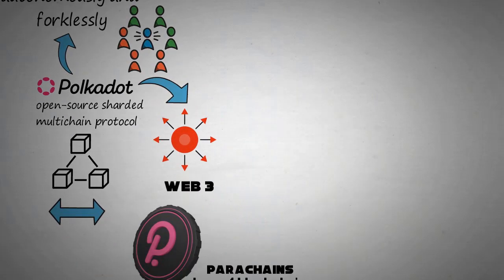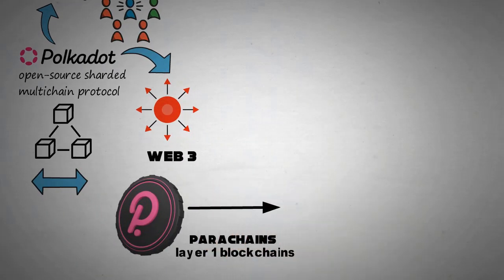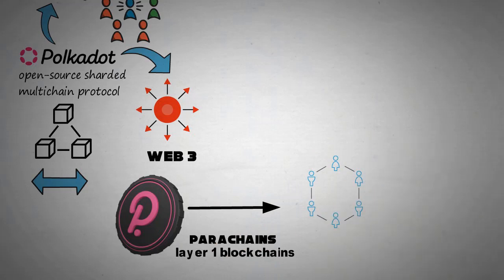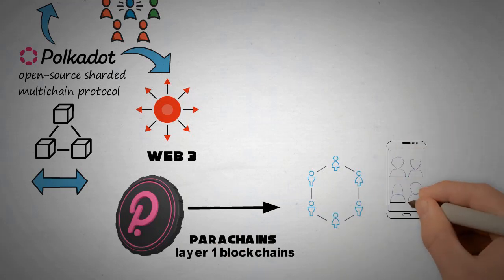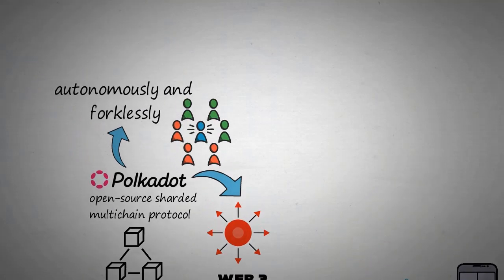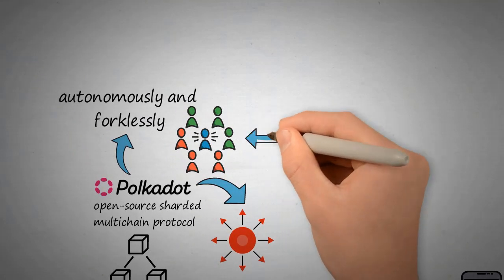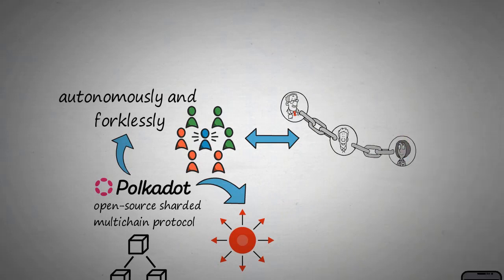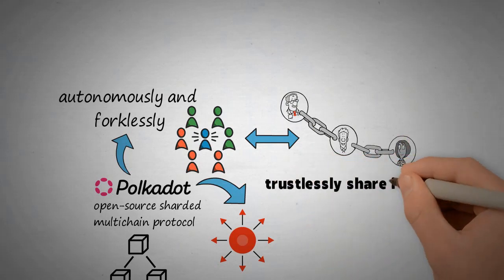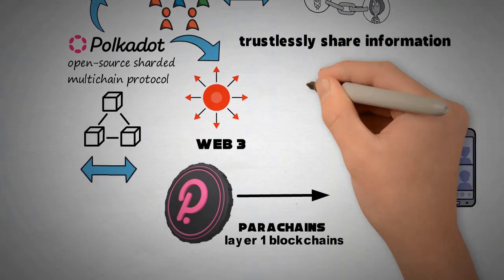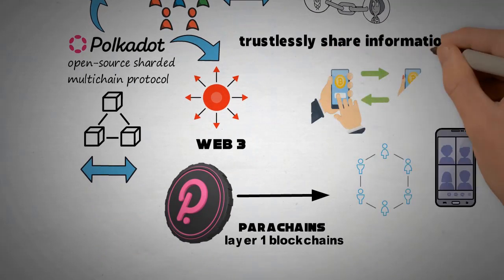Polkadot provides a foundation to support a decentralized Web, controlled by its users, and to simplify the creation of new applications, institutions, and services. The Polkadot protocol can connect public and private chains, permissionless networks, oracles, and future technologies, allowing these independent blockchains to trustlessly share information and transactions through the Polkadot relay chain.